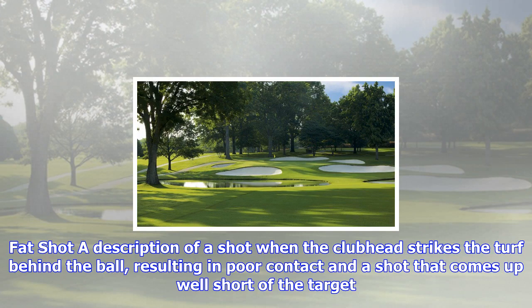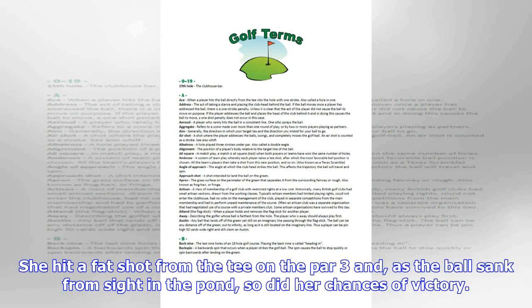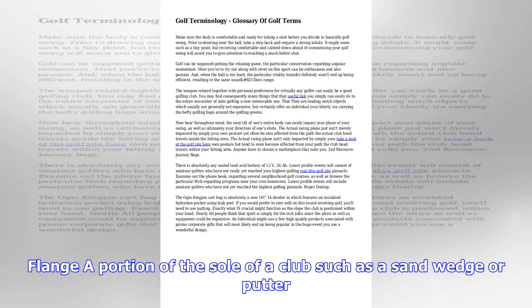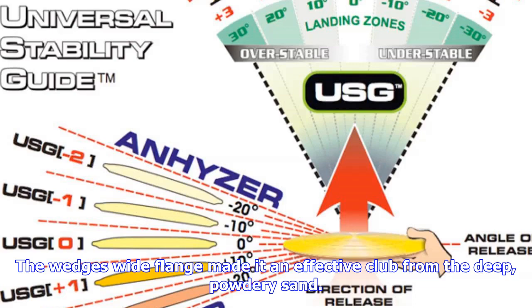Double bogey: a score of 2 over par on a hole. The double bogey ended her hopes of defending her title. Double eagle: a score of 3 under par on a hole. Jean Sarazen's double eagle at Augusta National is one of the most famous shots in golf history.